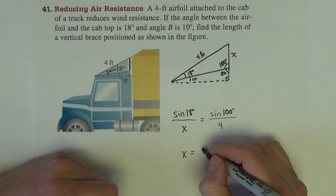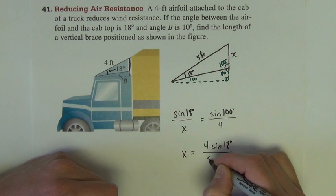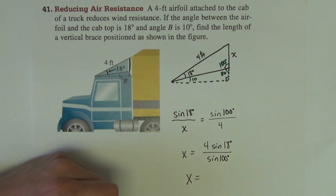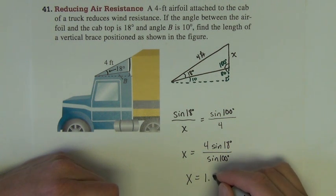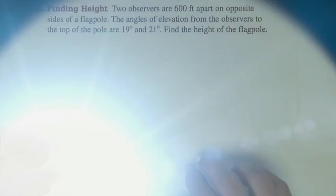So, x equals 4 sine 18 over sine 100. And on the calculator we go... I get one point... Looks like approximately 1.26 feet. Okay.